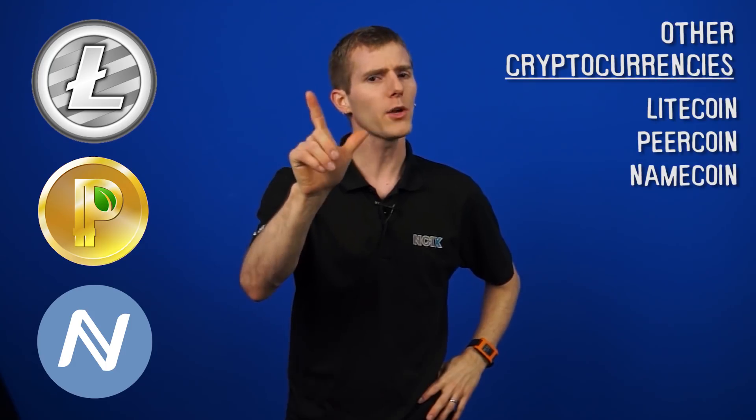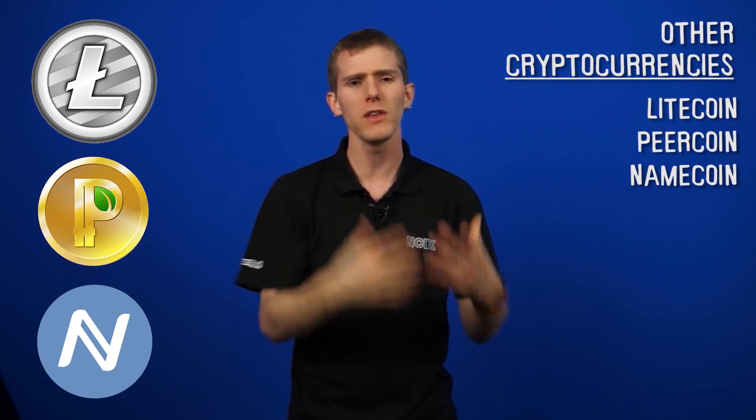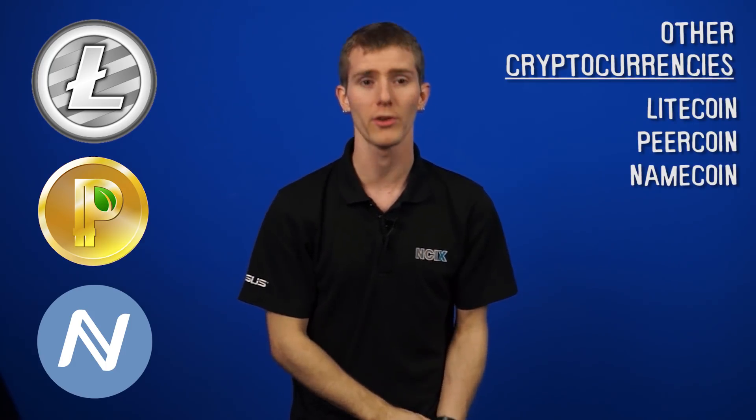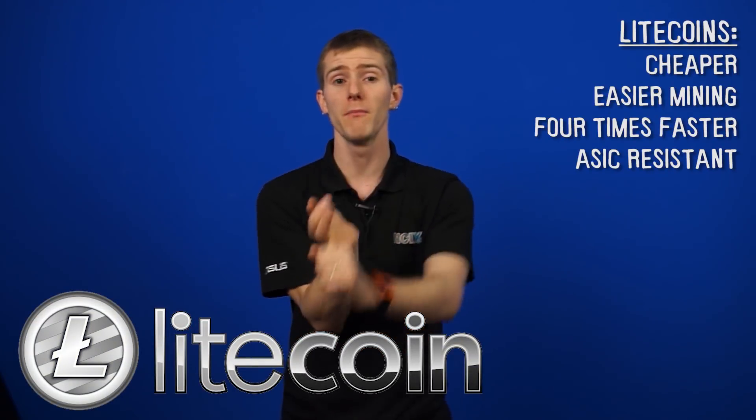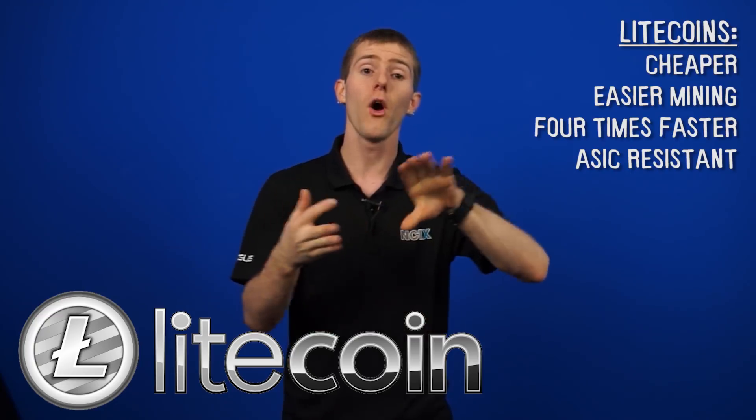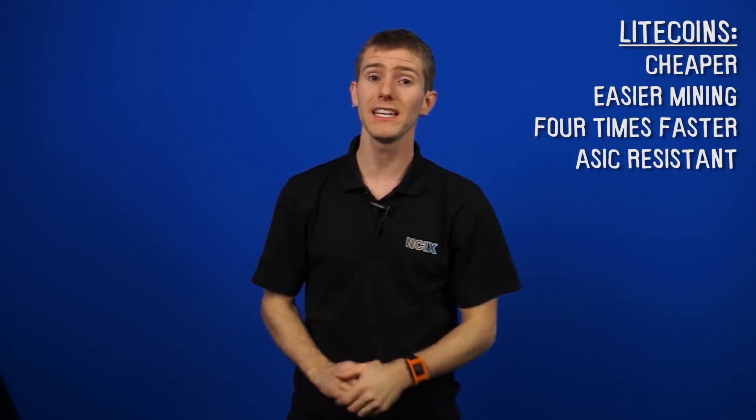But what about all these other cryptocurrencies? We've mostly talked about Bitcoin so far. Well, there are three main ones: Litecoin, Peercoin, and Namecoin. Litecoins are the second biggest cryptocurrency right now, with the main advantage being that they're a lot cheaper, they're easier to mine, and they're also about four times faster when completing a transaction.